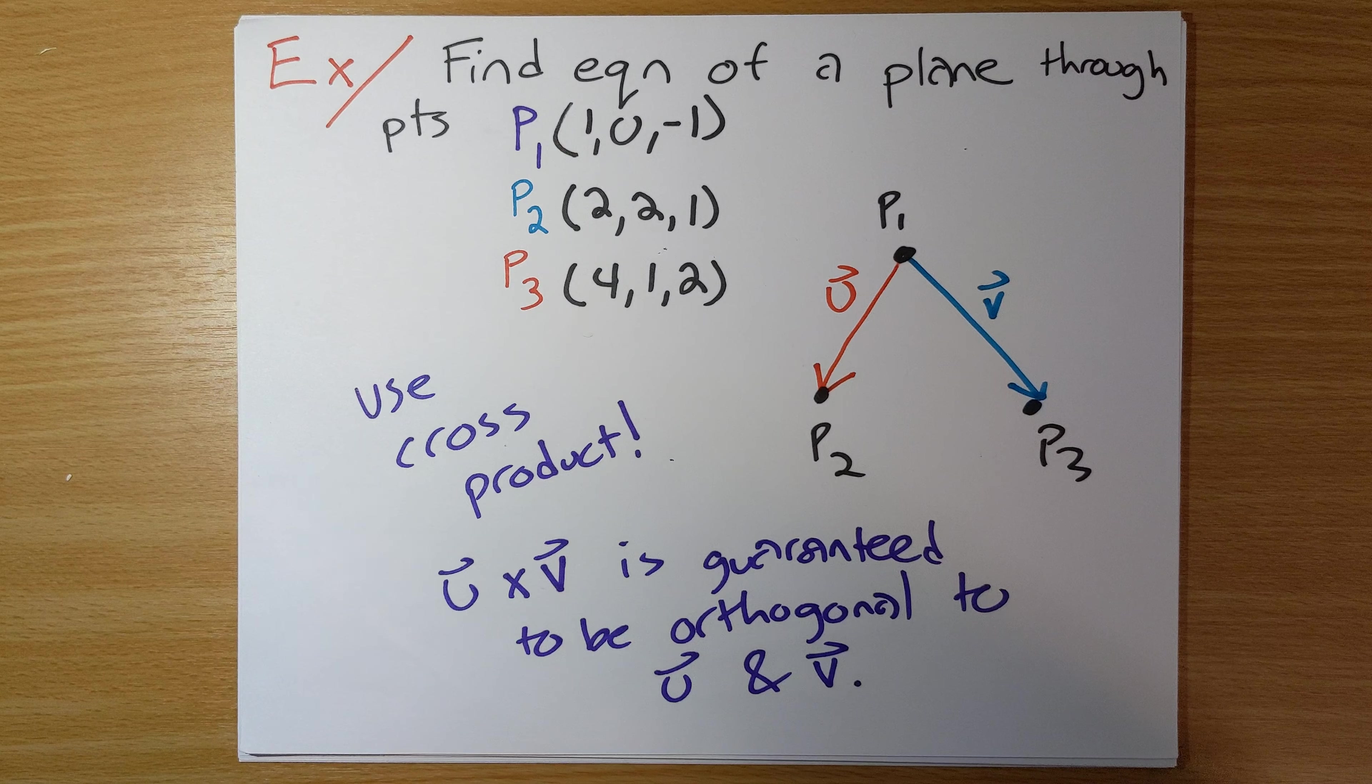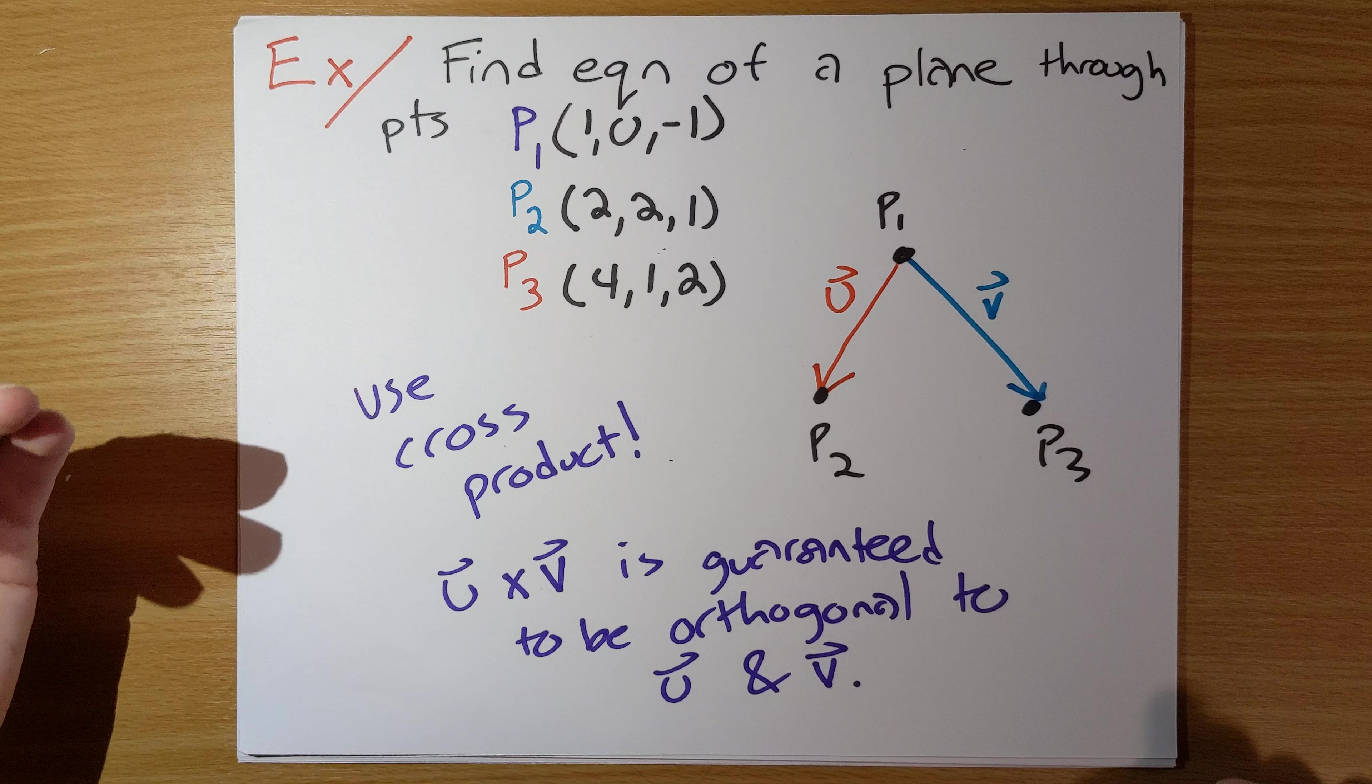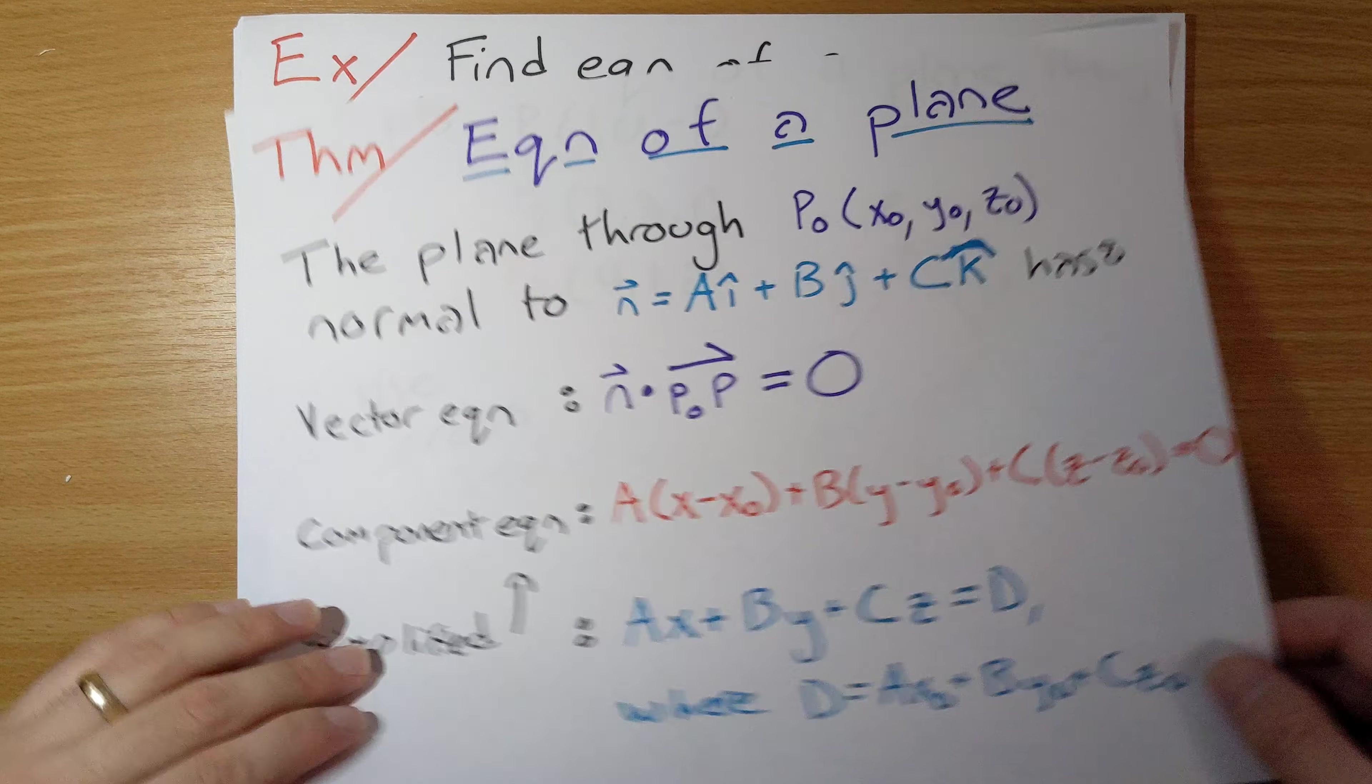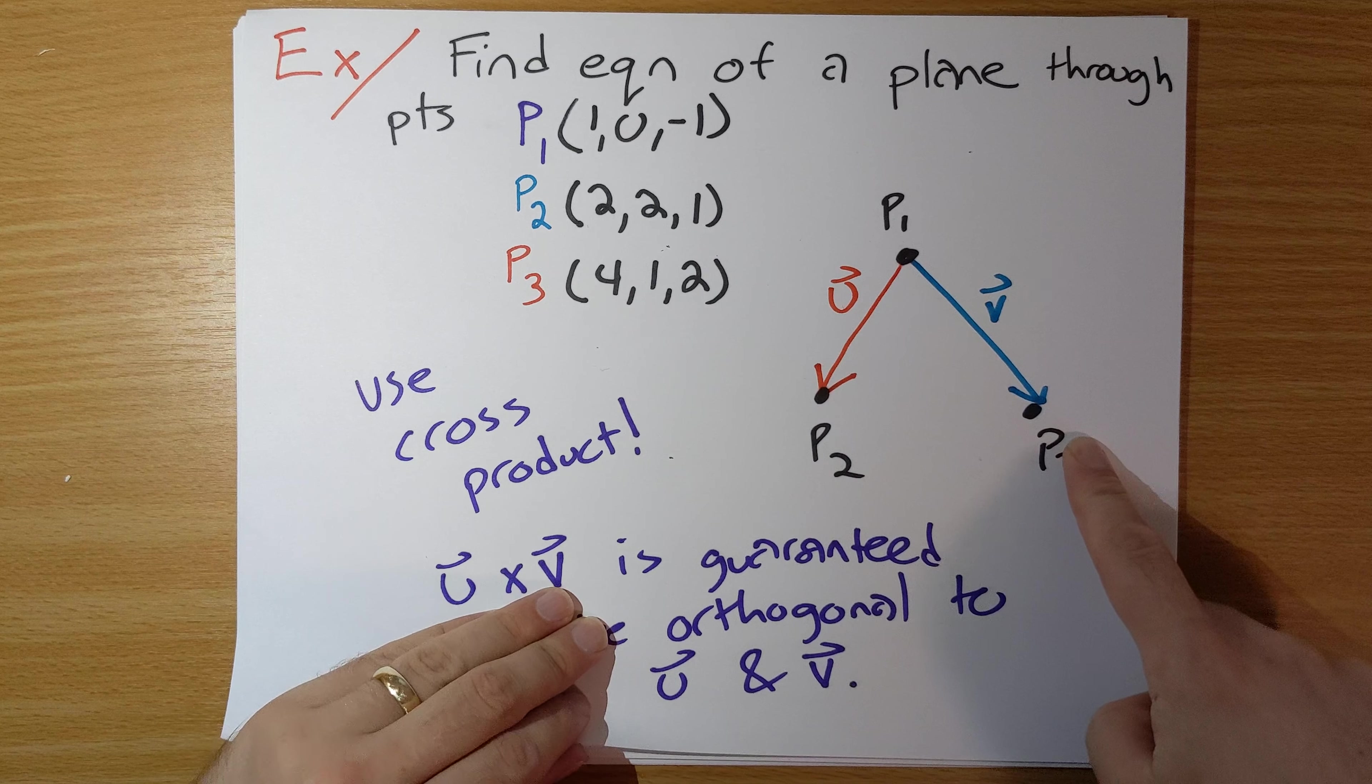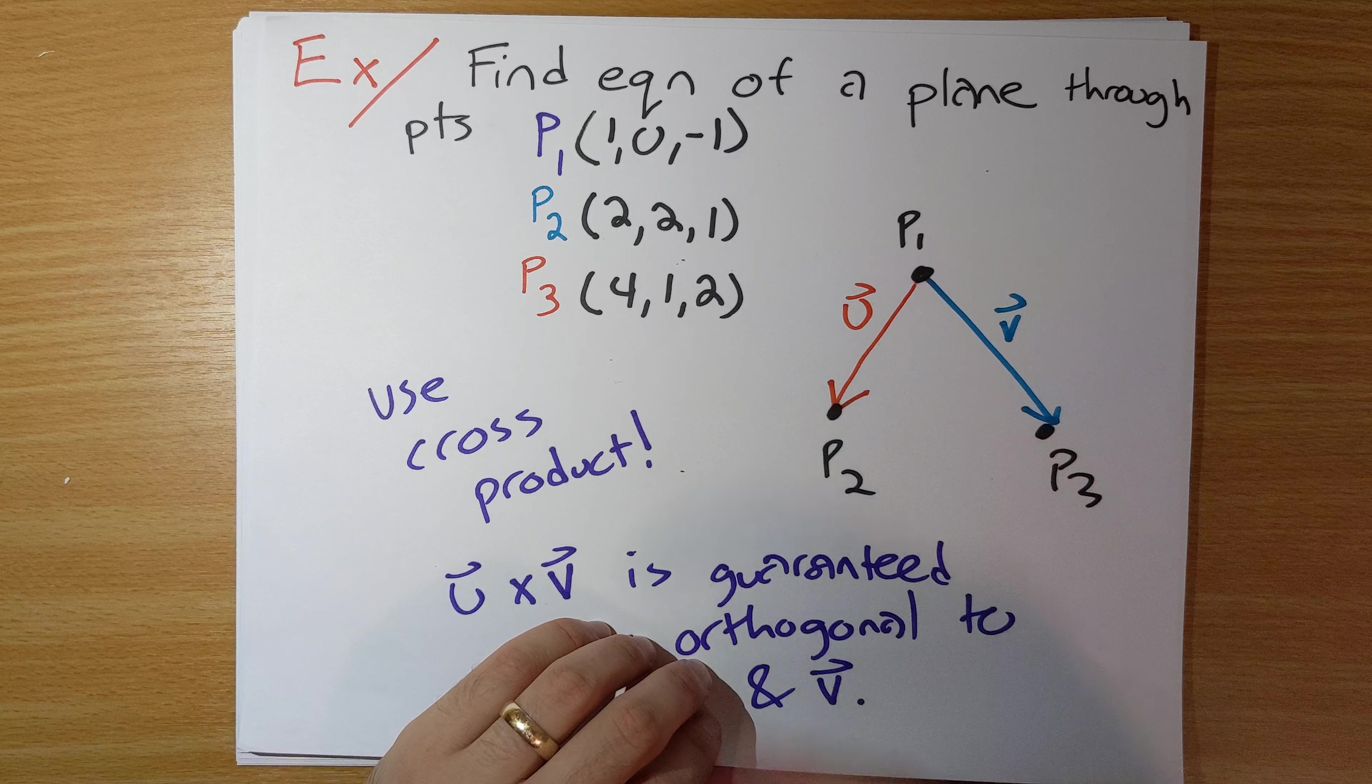Okay, so now our setup is clear. We need to calculate out these two vectors, U and V. And after that, we'll take the cross product, and that will give us our normal vector. At that point, we'll have a point and a normal vector, and we can use this theorem right here to write down our final answer. So I drew U as a vector from P1 to P2, V as a vector from P1 to P3. You could have done different combinations of U and V here. You could have U from P2 to P3, V from P2 to P1. That would have also worked.